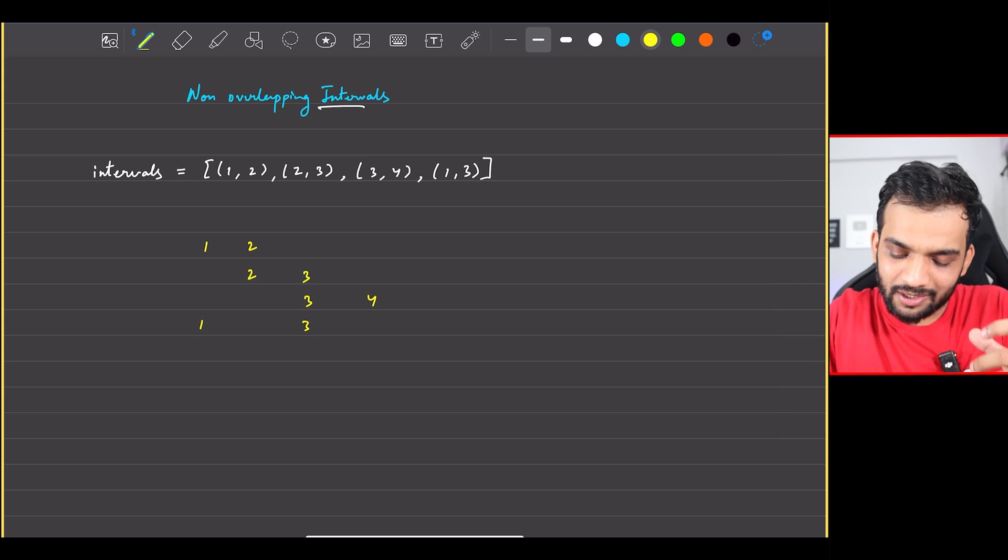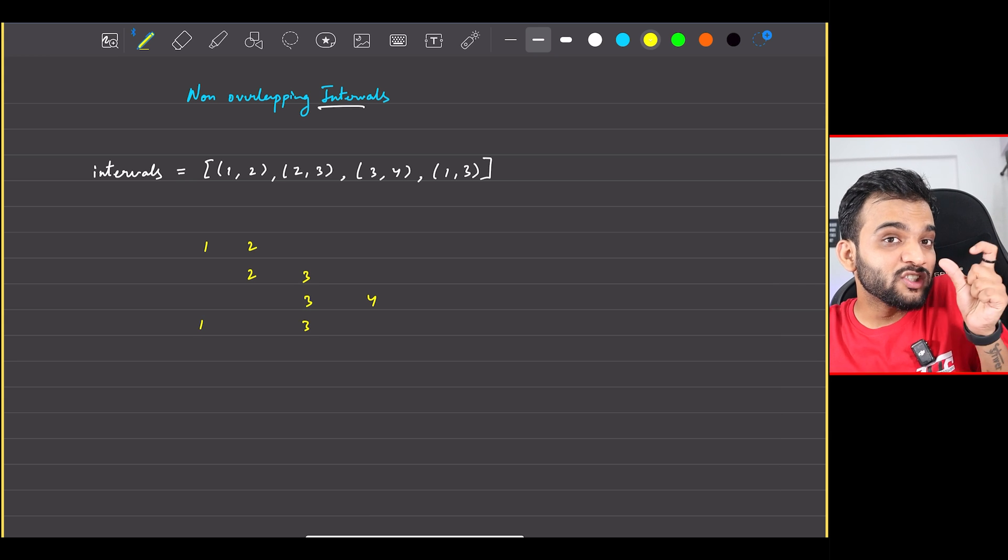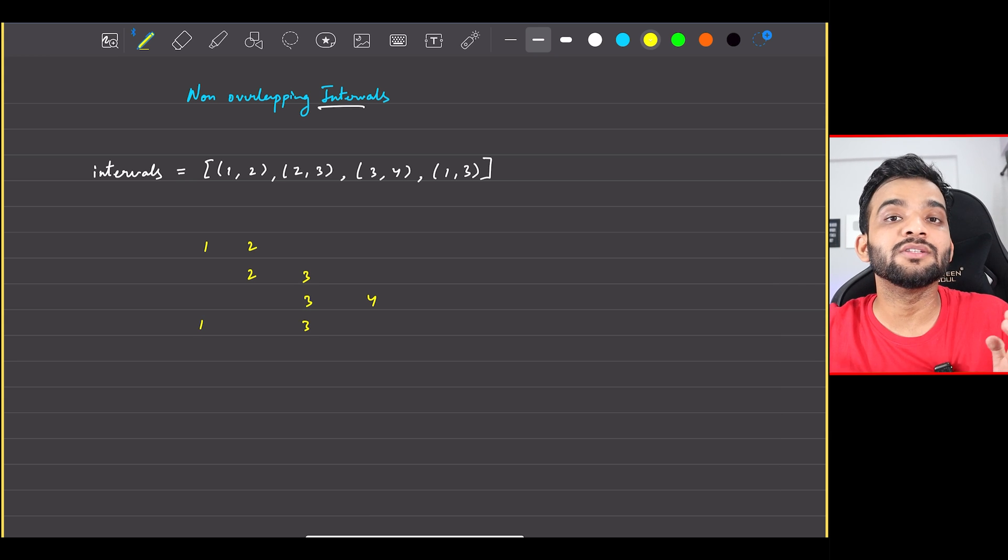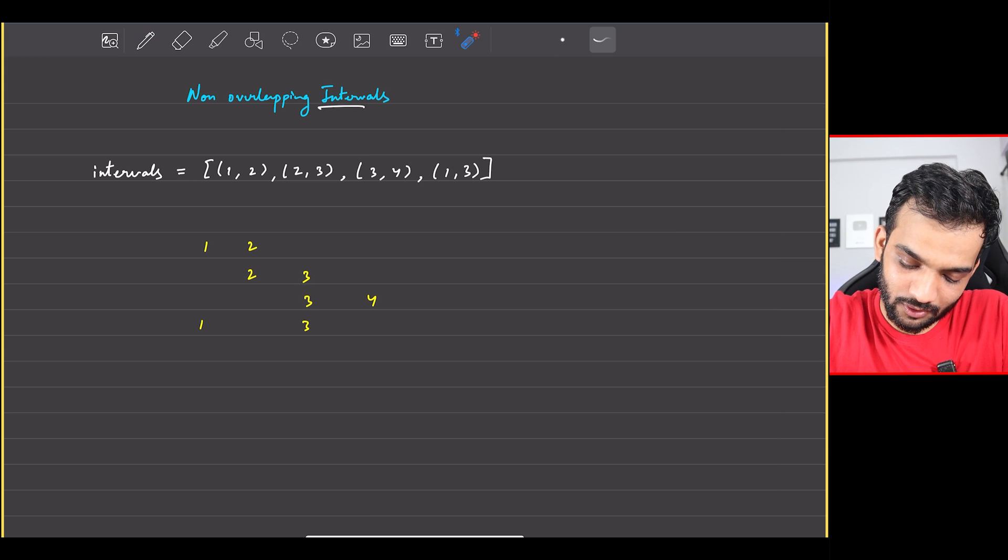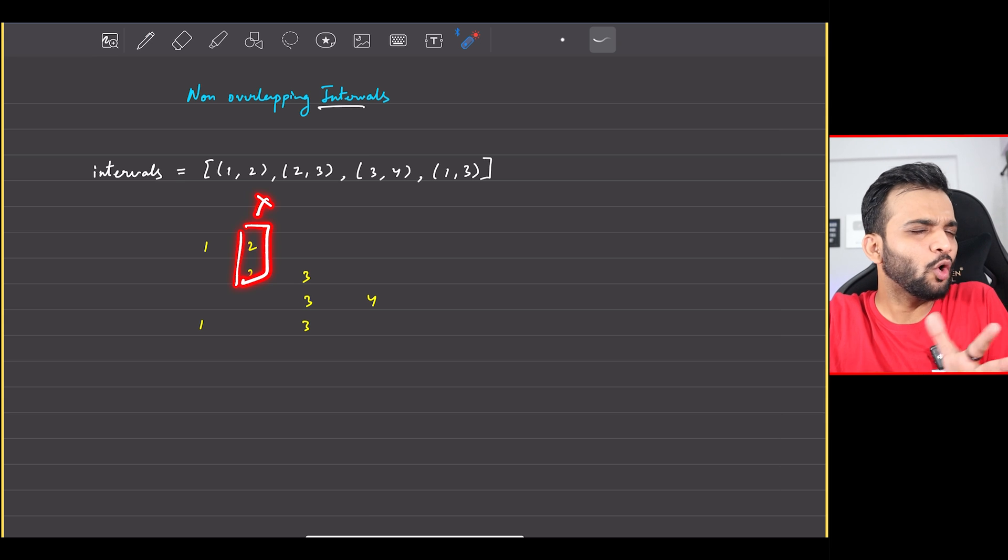First one is (1,2), next one is (2,3), the next one is (3,4), and the next one is (1,3). So I've written down all the intervals. Now the question is asking you to remove intervals which are making it overlapping.